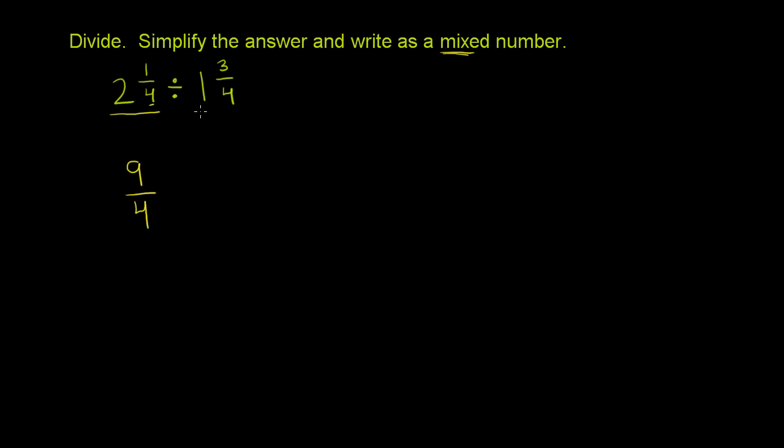And then the 1 and 3/4, same process. You're going to have 4 in the denominator. And then the numerator is going to be 4 times 1, which is 4, plus 3, which is 7. So this is the exact same problem here.